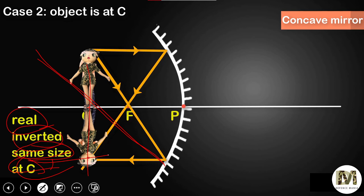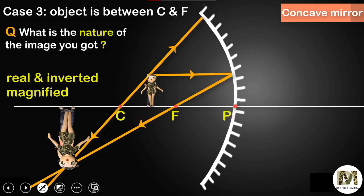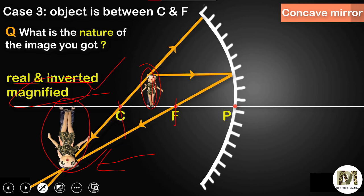Case 3: we place the object between the center and the focus. The image will form beyond the center. The image is real and inverted, but now it is magnified. So: case 1 was diminished, case 2 was same size, and case 3 is magnified. In concave mirrors, you will mostly get a real and inverted image.